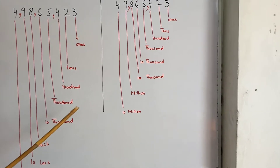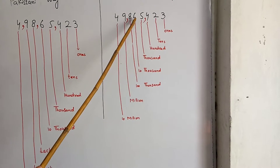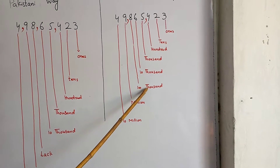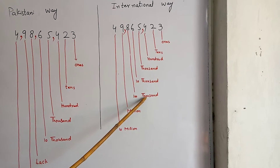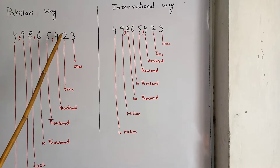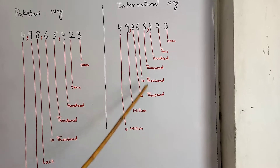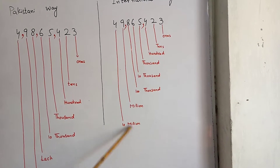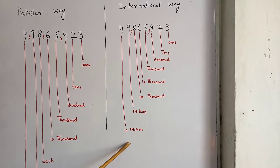But in the international way, the first value is ones, second is tens, third is hundreds, fourth is thousands, fifth is ten-thousands, and sixth is hundred-thousands. Then after hundred-thousands, millions will come. After millions, ten millions, and then 100 million will come. This is the difference between the Pakistani way and the international way.